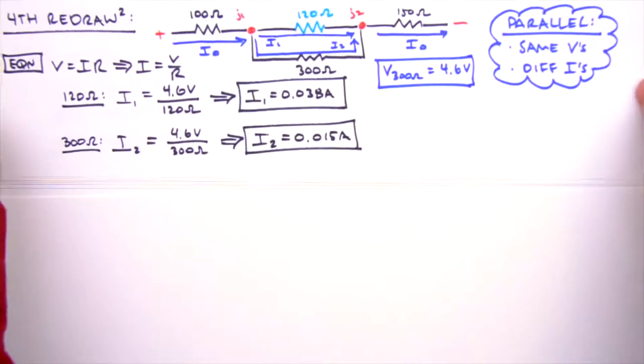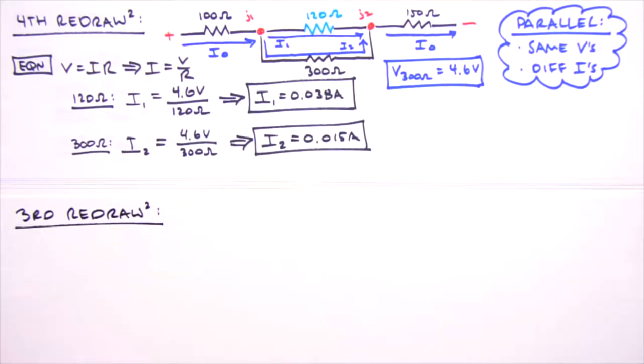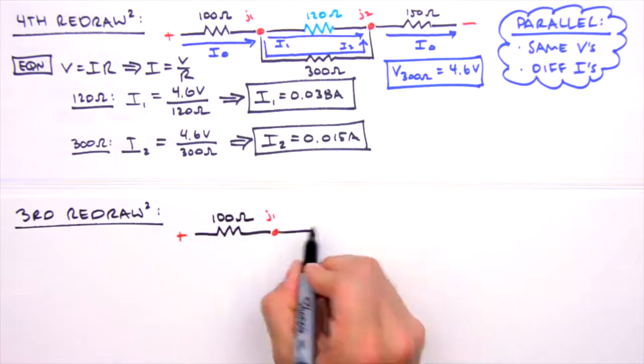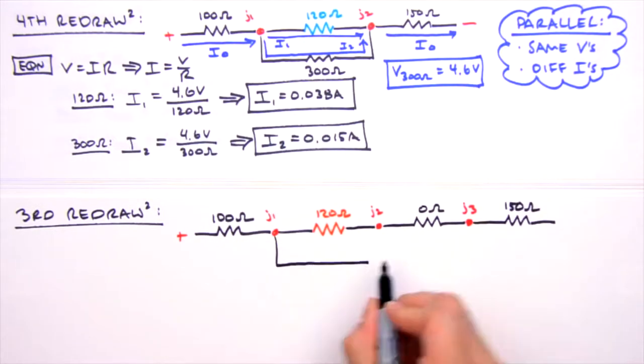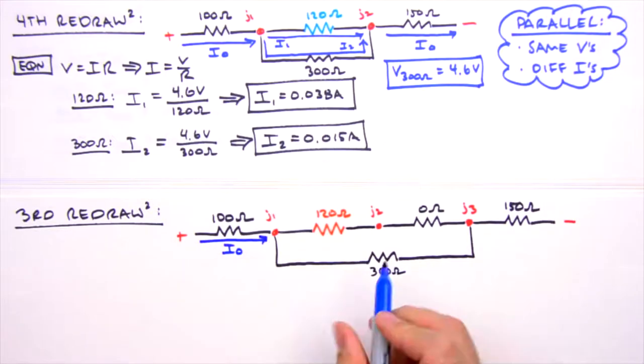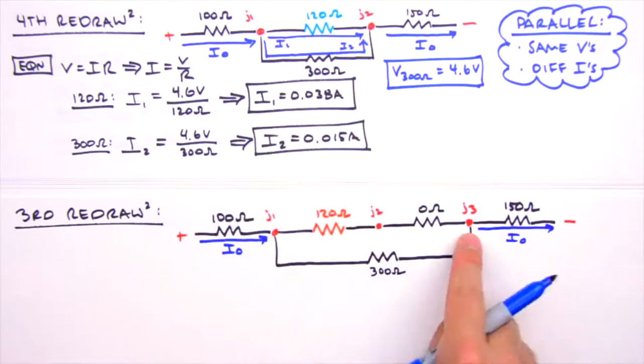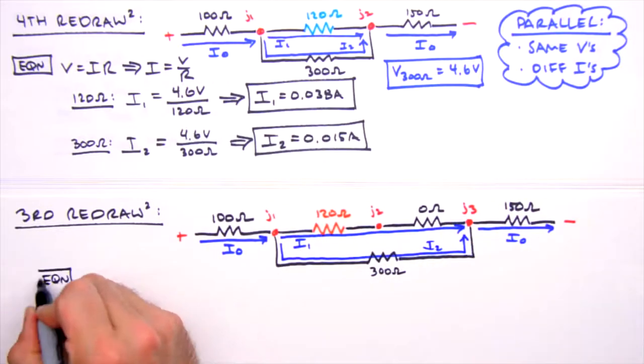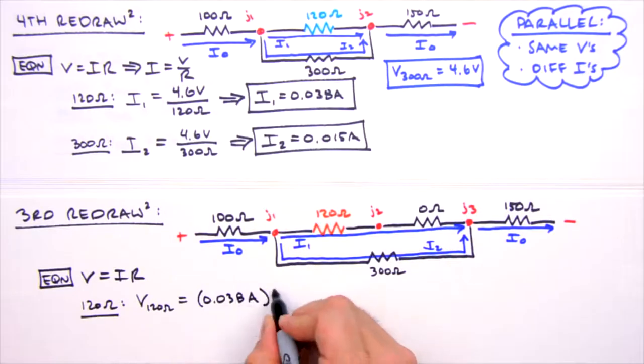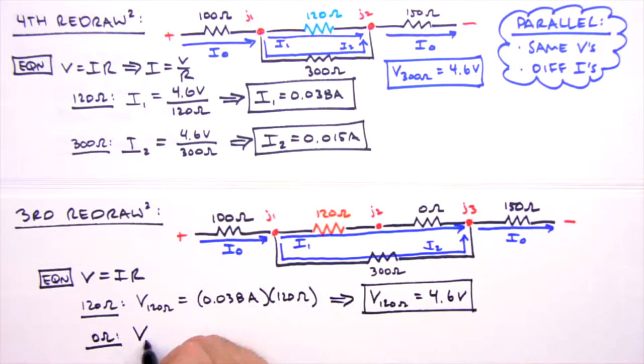Now to our third redraw. Here the 120 ohm resistor expands in a rather unexciting way. Out pops a goose egg resistor. I0 doesn't change. I1 passes through both the 120 ohm and 0 ohm resistor. And I2 is the same. We'll run the calculations for the sake of posterity, with the unsurprising result that the voltage drop over the 0 ohm resistor is 0 volts.